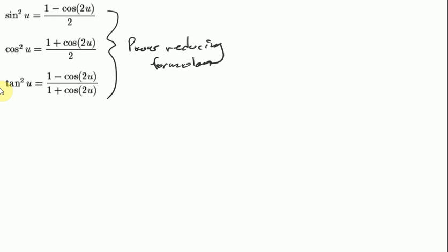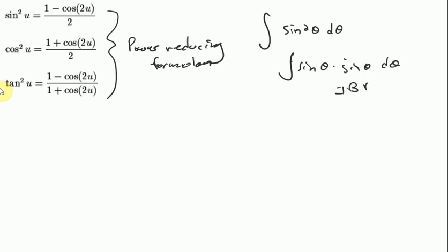Now, why would you want to use this? Usually it's something like this: if you have an integral of sine squared theta d theta, and you want to solve that integral, you could try to split it as sine theta times sine theta d theta, and then do integration by parts.